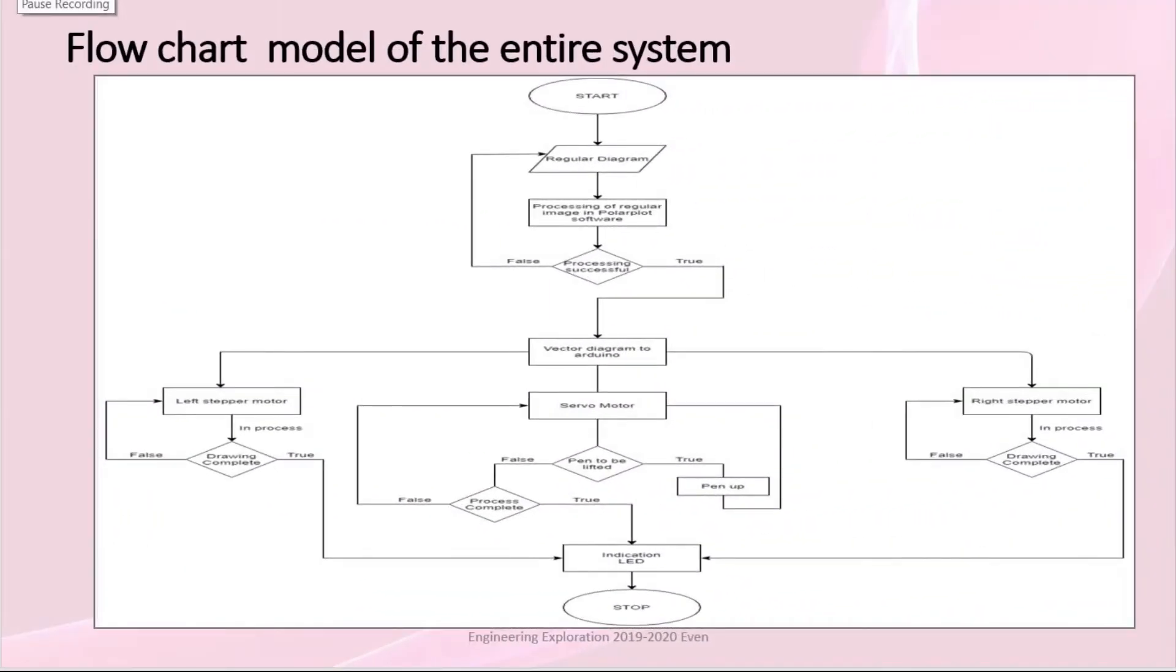So now let's move on to the flow chart model of entire system. We will input regular diagram to polar plot software. Then that regular diagram will be processed and converted into vector diagram to Arduino. If processing becomes unsuccessful, it will ask the input again. There are three main divisions in this process. The first step is left servo motor starts working for designing the diagram given. When diagram is completed, LED will glow immediately.